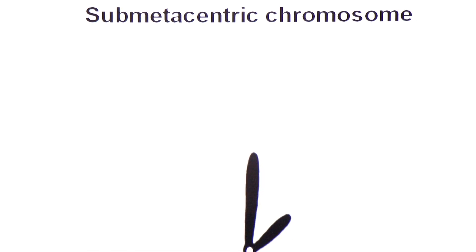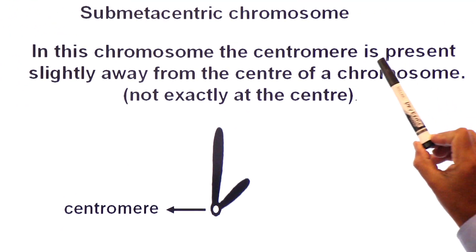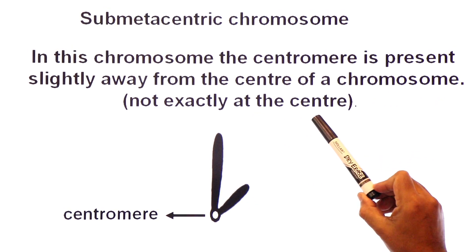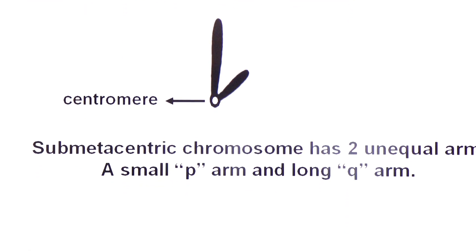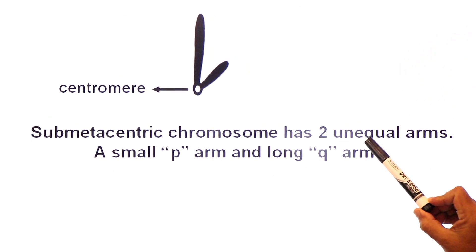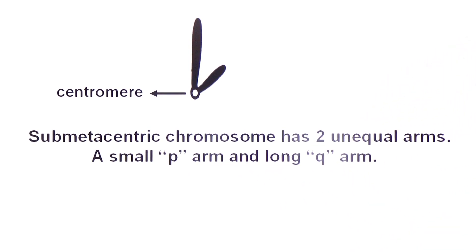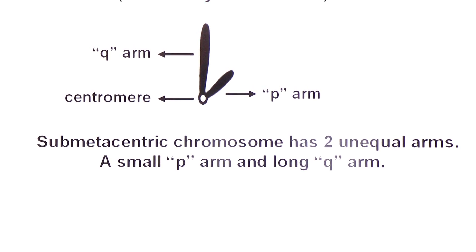Submetacentric chromosome: here the centromere is slightly displaced from the center — not exactly at the center, but slightly away from it. This results in a small arm known as the p-arm and a longer arm known as the q-arm.